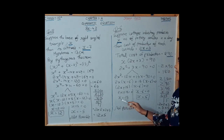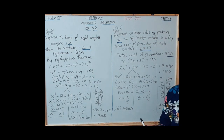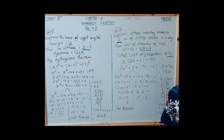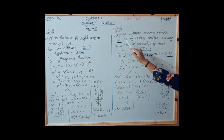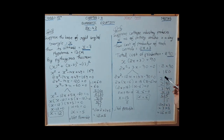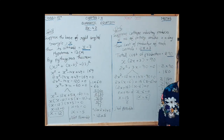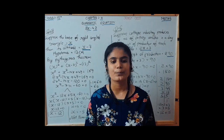One root is x equal to minus 15 upon 2, which is not possible since production quantity cannot be negative. So the answer is x equal to 6. The cottage industry produces 6 pottery articles in a day, and the cost of production of each article is 15 rupees. This completes exercise 4.2.